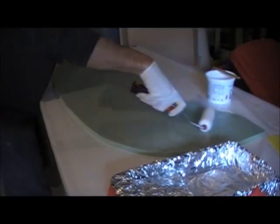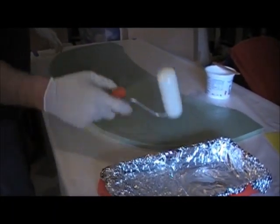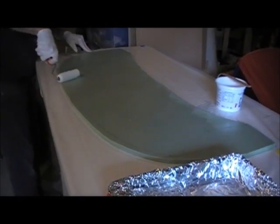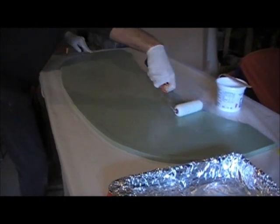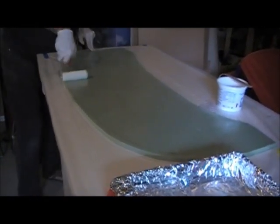Then wet out the foam just like you do with any other material using epoxy. It needs to be wet out thoroughly. So usually with this foam, the closed cell foam, it takes two coats of clear epoxy to get it properly wet out before applying the fiberglass.